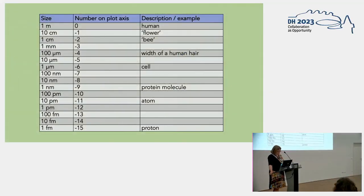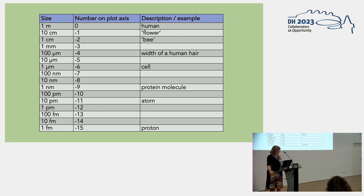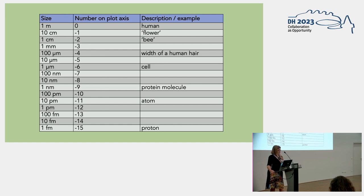Let me quickly explain my methodology. I started by establishing a scale — fairly simple — starting at human level in meters, going up and down larger and smaller on a log scale. So we start with human size, move down the scale all the way to protons; in the end I don't think I found anything smaller than an atom in Dickinson's work. The ones in quotation marks are examples of words or phrases from her poems that represent a particular point on the scale.